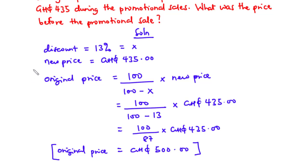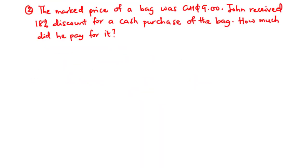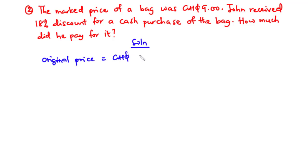Now for question 2: the marked price of a bag was 9 Ghana cedis. John received an 18 percent discount for a cash purchase of the bag. How much did he pay? From the question, the original price is 9 Ghana cedis and the discount is 18 percent.